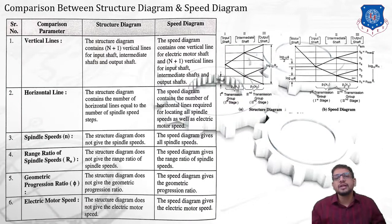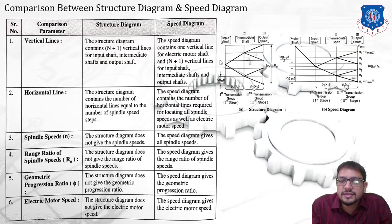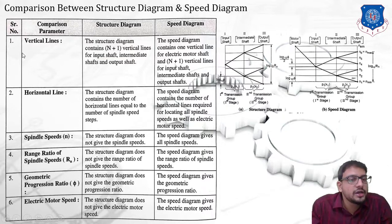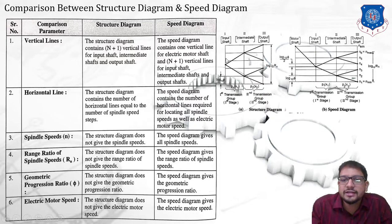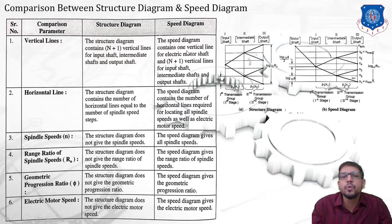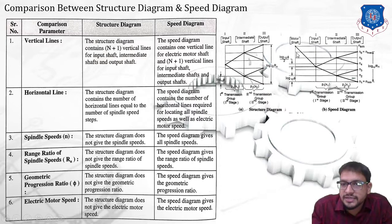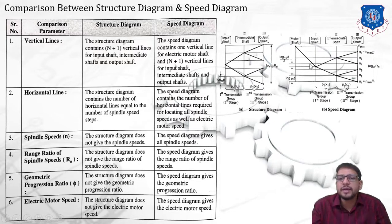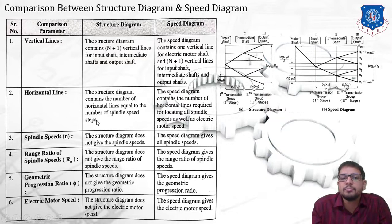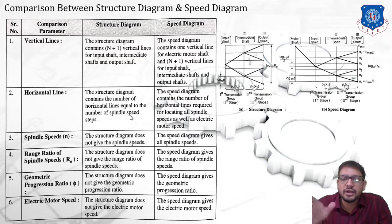Now let's compare the structural diagram and the speed diagram. For vertical lines: the structural diagram has n plus 1 vertical lines for input shaft, intermediate shaft, and output shaft. The speed diagram contains one additional vertical line for the electric motor, plus n plus 1 lines for the shafts, giving n plus 2 total vertical lines. For horizontal lines: the structural diagram contains horizontal lines equal to the number of spindle speed steps (Z equals horizontal lines).